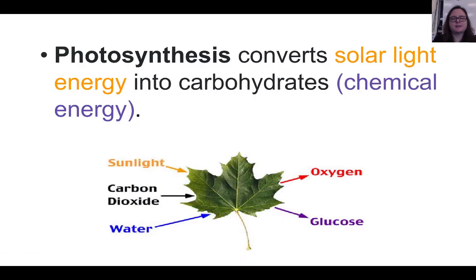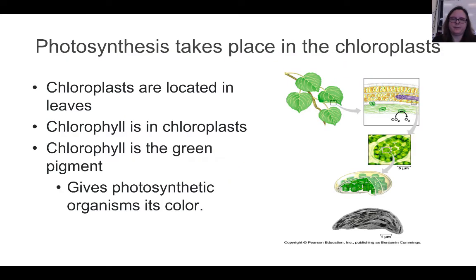Photosynthesis converts solar light energy — or energy from the sun — into carbohydrates, or glucose, which is a chemical energy. Photosynthesis takes place in the chloroplast of cells. Chloroplasts are located in the leaves and are an organelle. Inside those chloroplasts is a green pigment called chlorophyll. Chlorophyll gives photosynthetic organisms their green color.